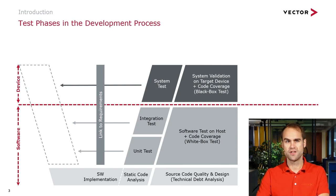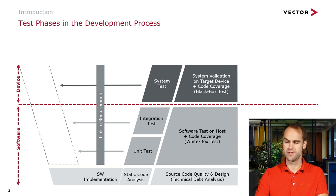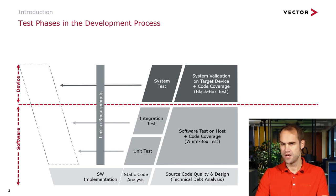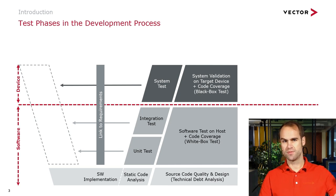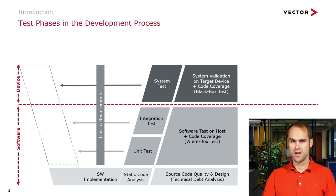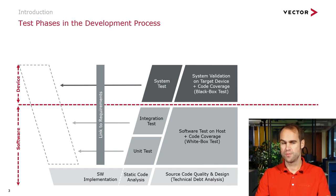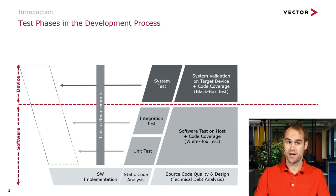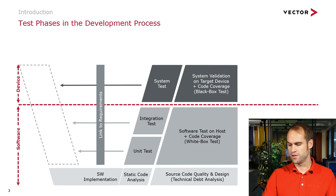Here you can see an overview of the different test phases that you typically go through in the development cycle. I will cover those test phases bottom up in the next slides, but you can already see that there is a clear delineation between the system level tests on top and the rest. Unit and integration tests have the benefit that they can be executed in software environments, while the system level tests have to be executed on the target hardware. Let's have a look at the characteristics of the different test phases.